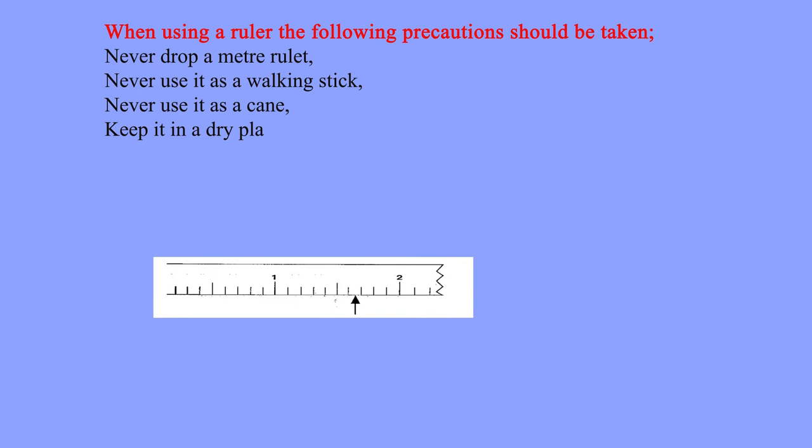When using a ruler the following precautions should be taken. Never drop a meter ruler. Never use it as a walking stick. Never use it as a cane. Keep it in a dry place away from corrosive substances.